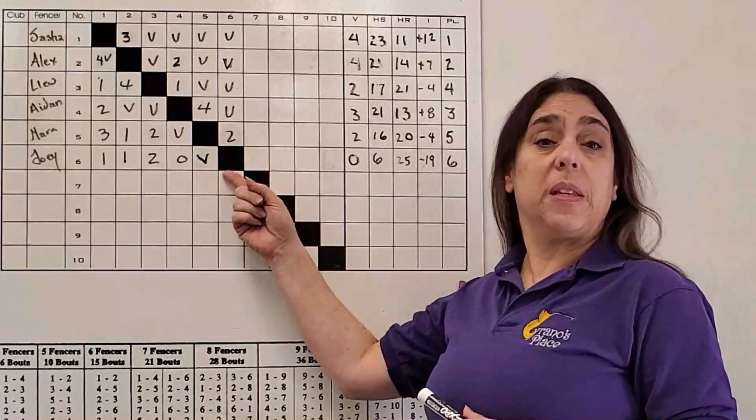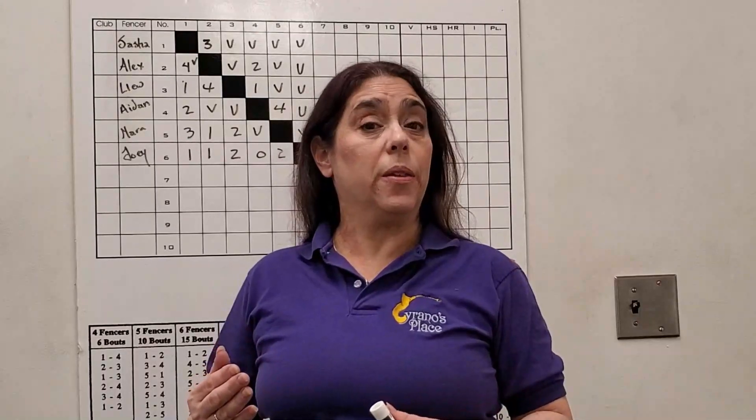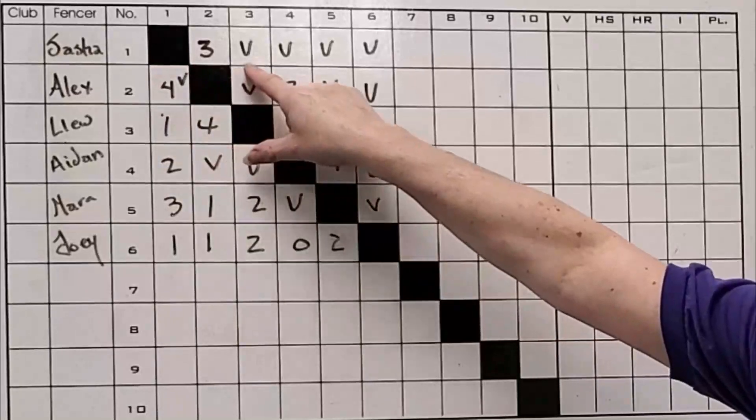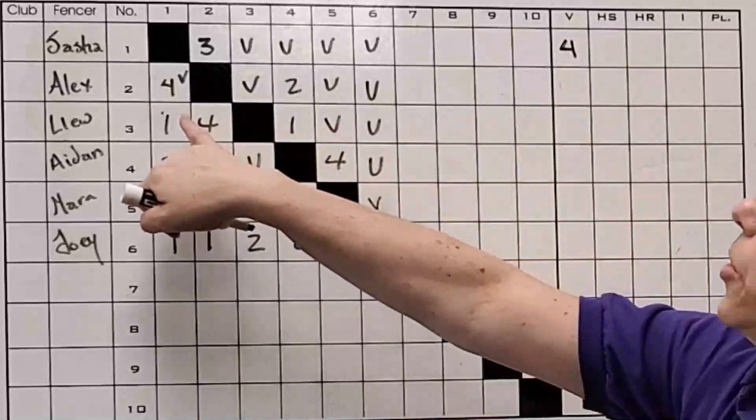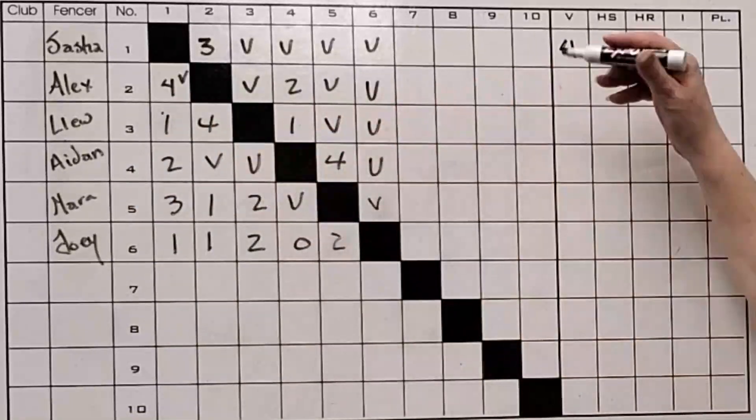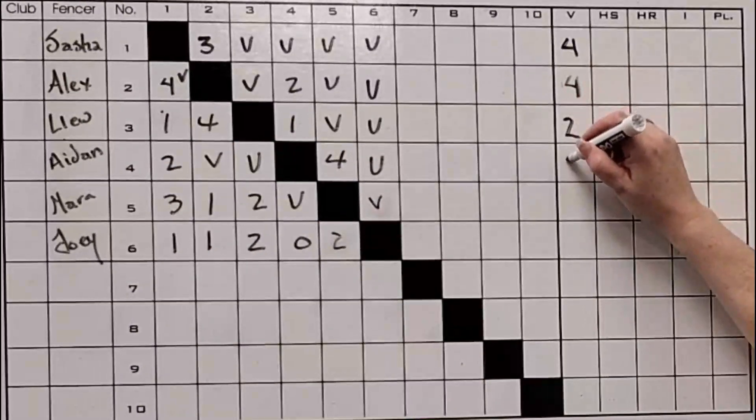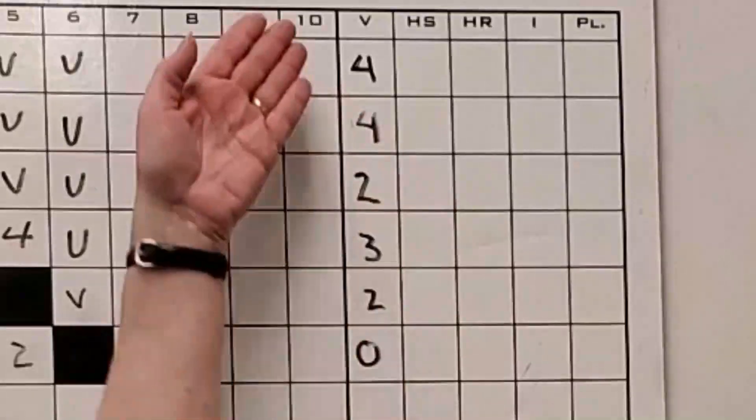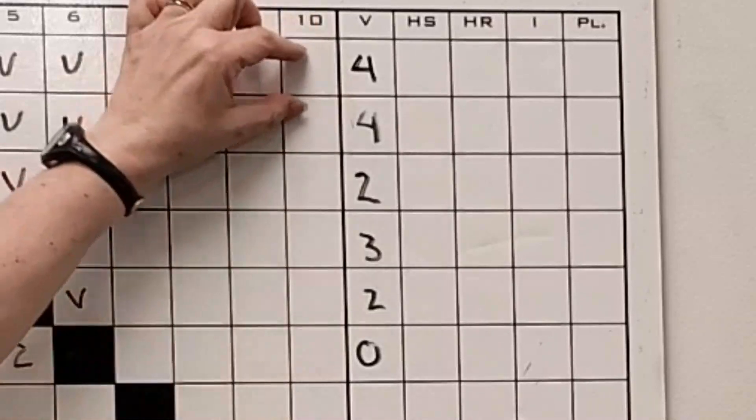The first piece of information that determines one fencer from another in terms of placement will be the victories. We're going to count up the victories in this column. So we go across: Sasha has one, two, three, four victories, as compared to Alex who's got one, two, three, four victories also. So as you can see, we have ties with our victories.